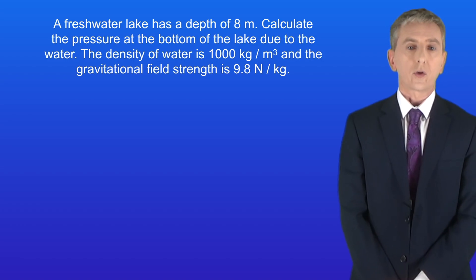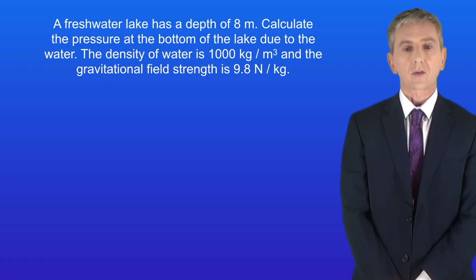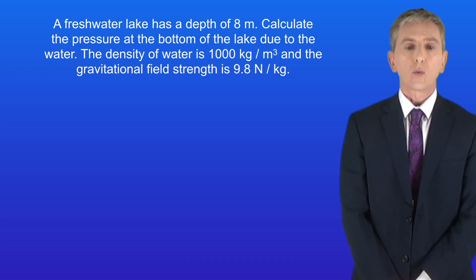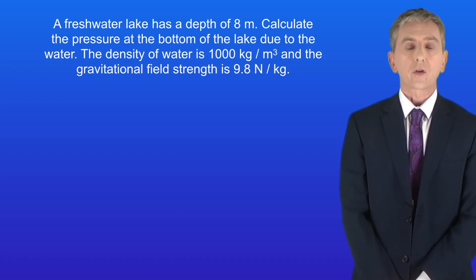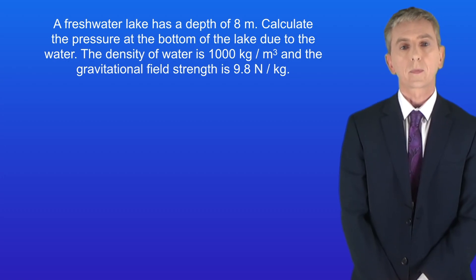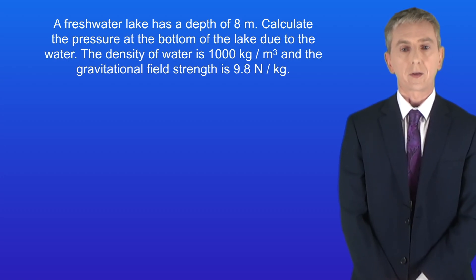Here's a sample question for you. A freshwater lake has a depth of 8 meters. Calculate the pressure at the bottom of the lake due to the water. The density of water is 1000 kilograms per meter cubed and the gravitational field strength is 9.8 newtons per kilogram. Pause the video now and try this question yourself.